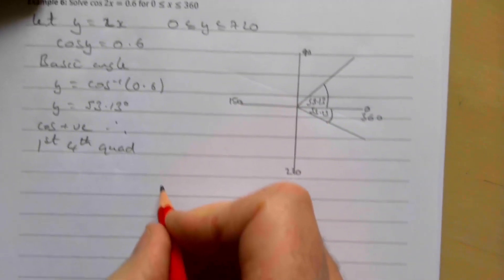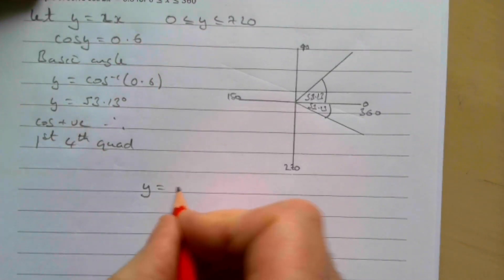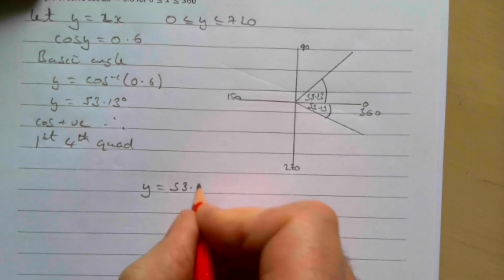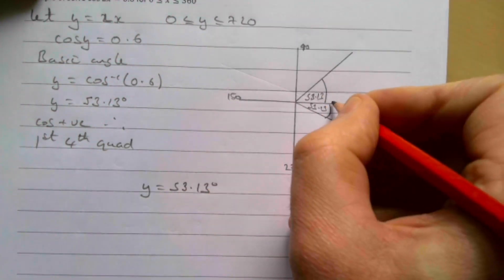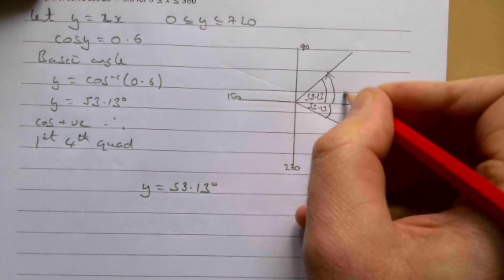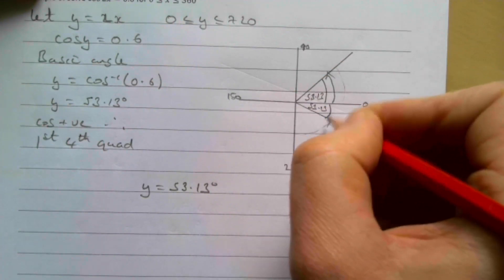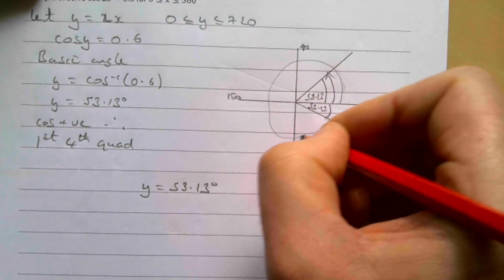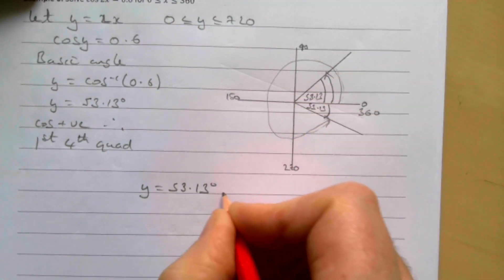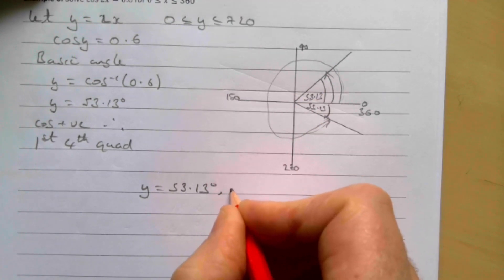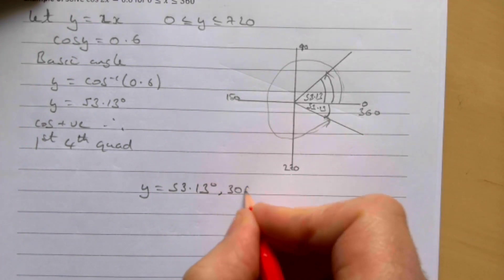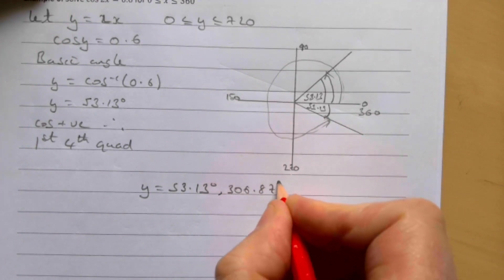So my possible values for y are going to be 53.13 degrees. That's that one. My next one goes all the way around to there, so that's going to be 360 minus 53.13, which is 306.87 degrees.